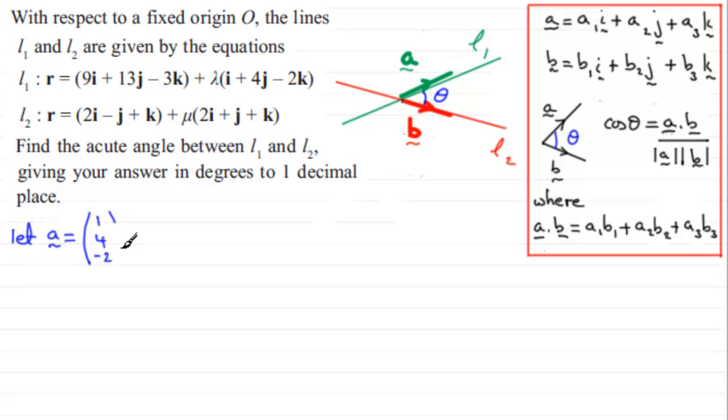And then we've got B, the other direction vector, I'm going to take then as two, one, one.